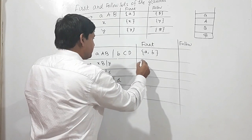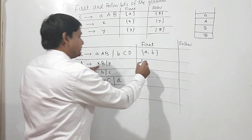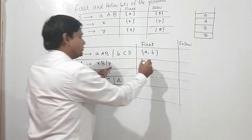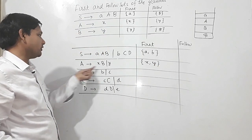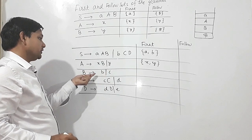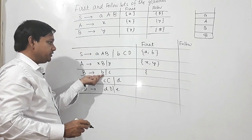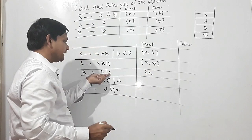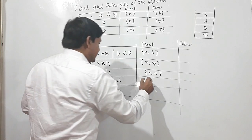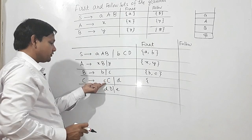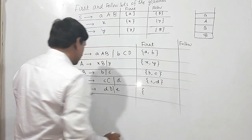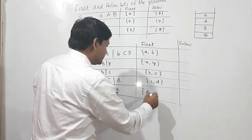First of A will be X and Y, because from one production we get terminal X and from another we get terminal Y. For B, First will be p for one production, and C is also terminal so 'c' is also a First of B. For C, First is 'c'. For D, the First terminals are: 'd' for two productions, and 'e' for another production.